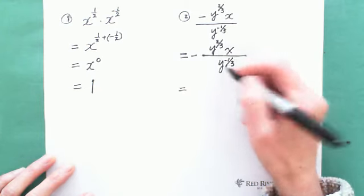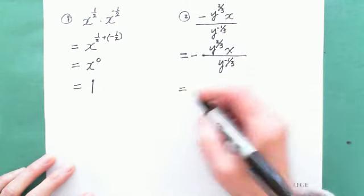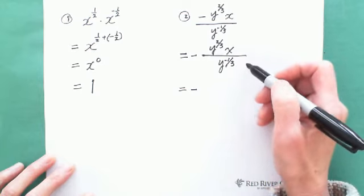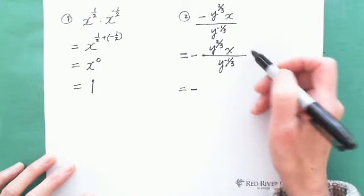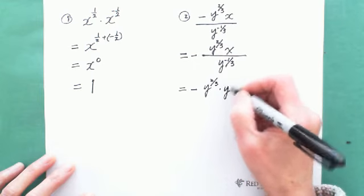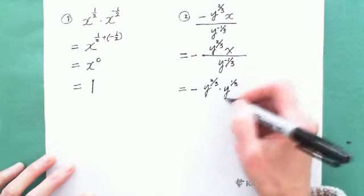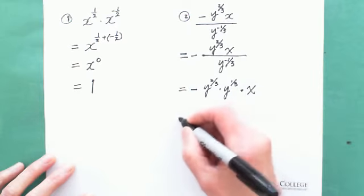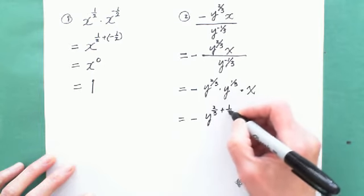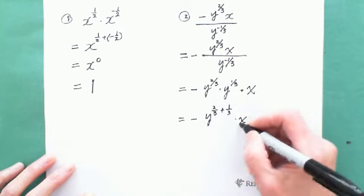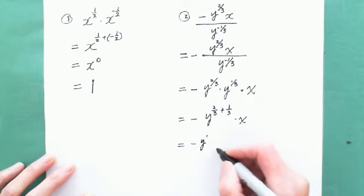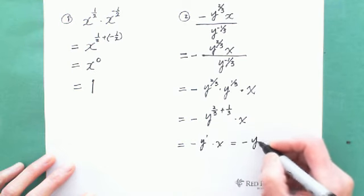This is much easier now because we have y and y together. You can also do subtraction: 2/3 subtract negative 1/3 gives the same result. Either way, we move the negative exponent to the top and get y to the 2/3 multiplied by y to the 1/3, times x. We combine these two y terms by adding the exponents: 2/3 plus 1/3 is 3/3, which equals 1. So y to the 1 times x gives us negative y times x.